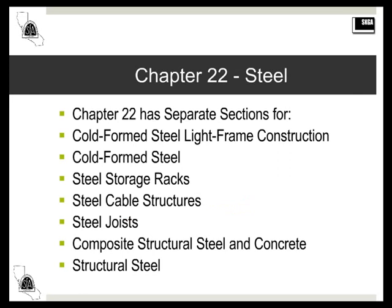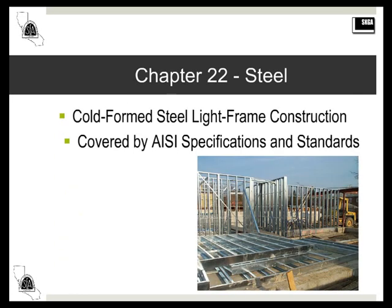In those three pages, Chapter 22 gets into all the different types of steel construction covered. I've arranged these sections in reverse order, as that is how I'm going to talk about them, and we're going to start switching back and forth between Chapter 22 and Chapter 17. Cold-formed light frame — that's when you build something out of steel studs, joists, and the like. It's a lot like wood light frame construction, and the inspection is very similar, so I'm not going to talk much about it.